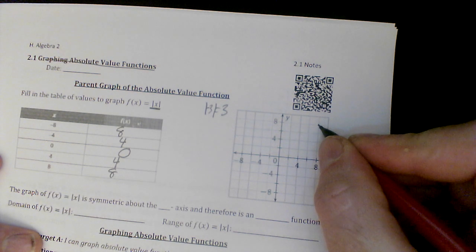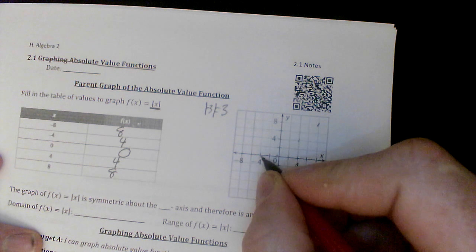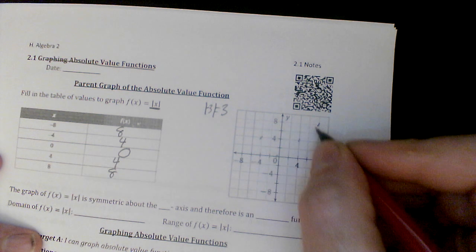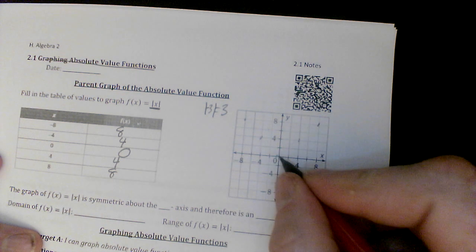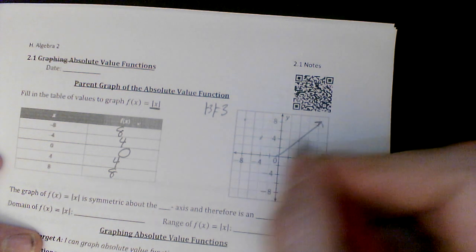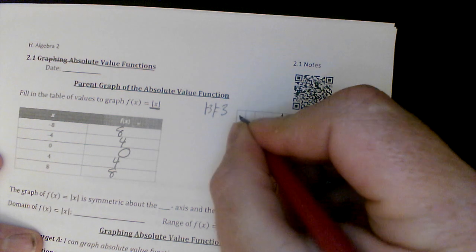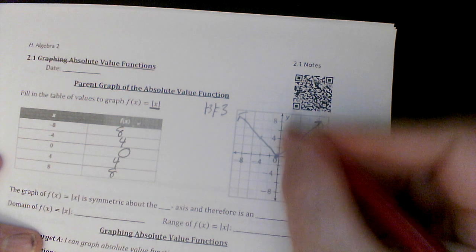And we have something that looks like this. We have 8, 8, 4, 4, 0, 0. Negative 4 is also positive 4. And negative 8, and we've got this beautiful graph that goes on forever and has a vertex and a line of symmetry.